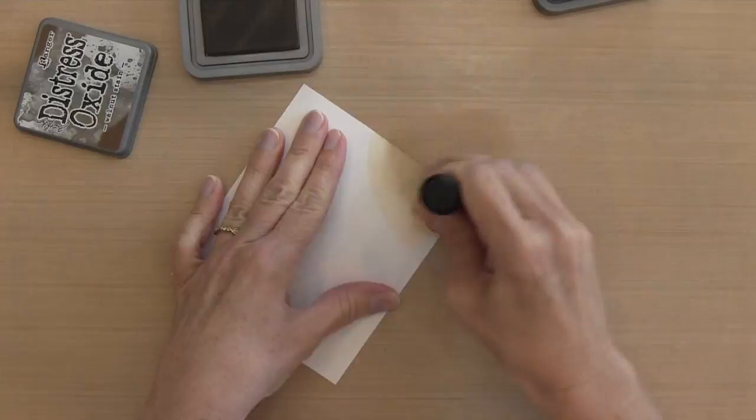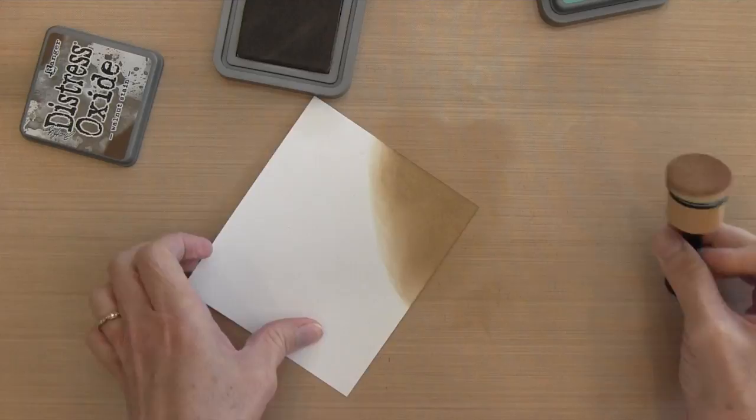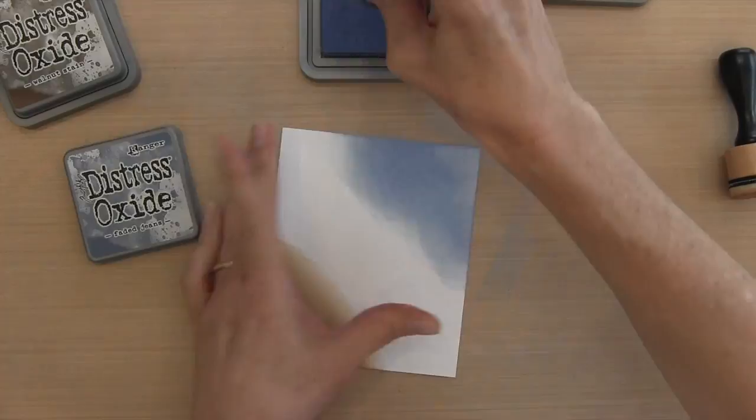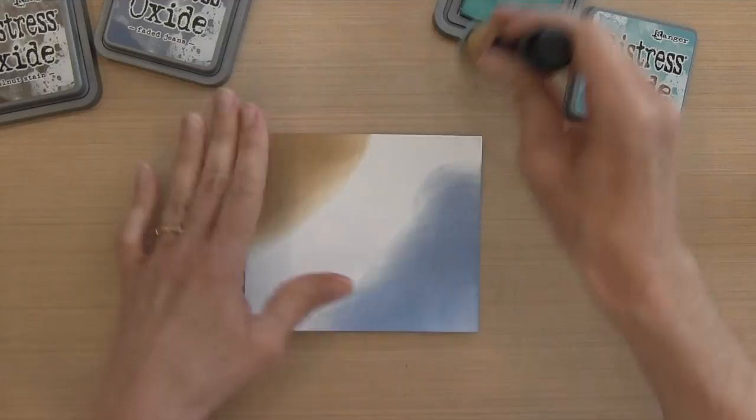I'm going to cover up the corner here and this is going to be my sand. Then I'm going to move on to Faded Jeans, just moving in circles kind of off the edge of my cardstock, moving onto the cardstock. I'm making sure I'm going to have all three of these colors within the circle that I'm going to cut out. Finally, my last color is going to be Broken China.